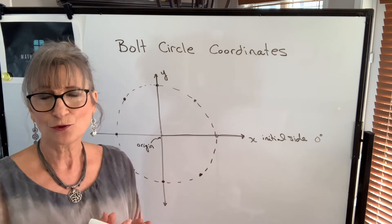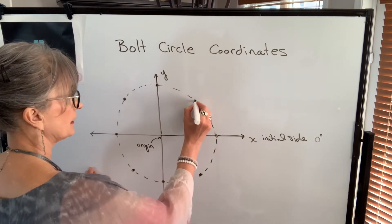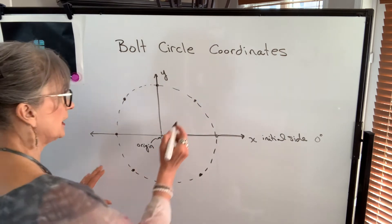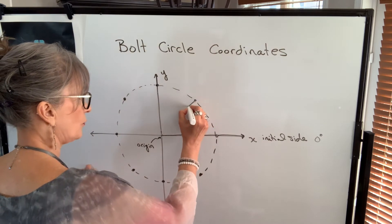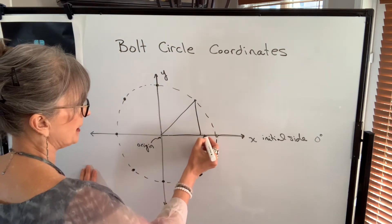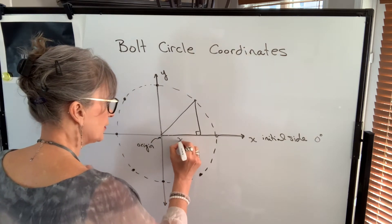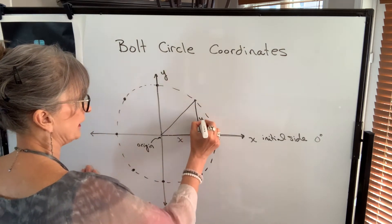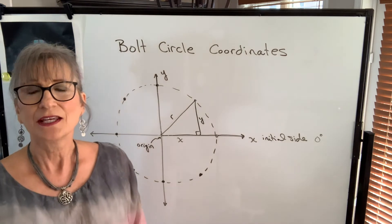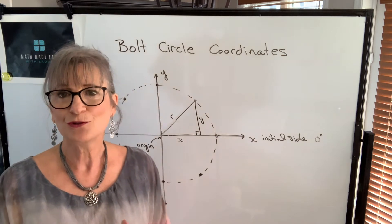In order to find the coordinates of the other holes, we're going to have to use right triangles. For example, if our next hole is in quadrant one, both x and y coordinates will be positive. I'm going to draw a line from the center of that hole to the origin, then drop down a vertical line to the x-axis, perpendicular to it, making a right angle. The length along the x-axis is x, the vertical distance is y, and the hypotenuse of that right triangle will be the radius.